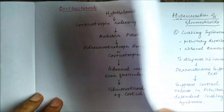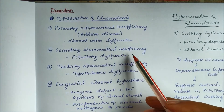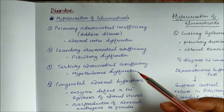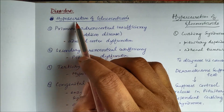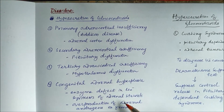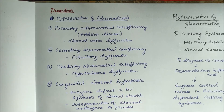Primary adrenal cortical insufficiency means adrenal cortex dysfunction; secondary is anterior pituitary dysfunction; and tertiary is hypothalamic dysfunction — all three are forms of hyposecretion of glucocorticoids. Primary adrenal cortical insufficiency is also called Addison's disease. Another condition is congenital adrenal hyperplasia, where there is an enzyme defect in adrenal steroid synthesis, leading to overproduction of adrenal androgens in females.